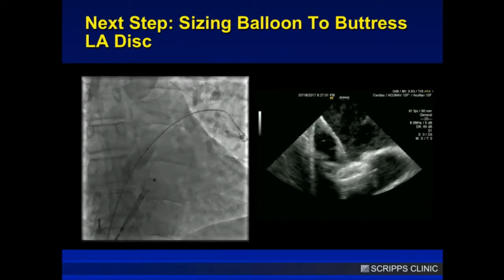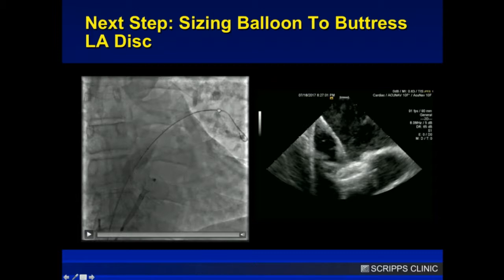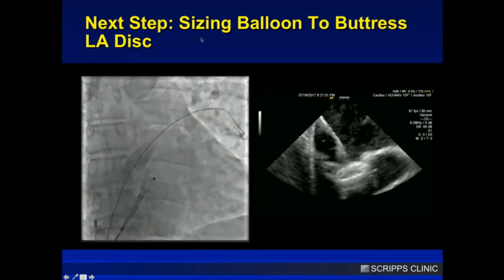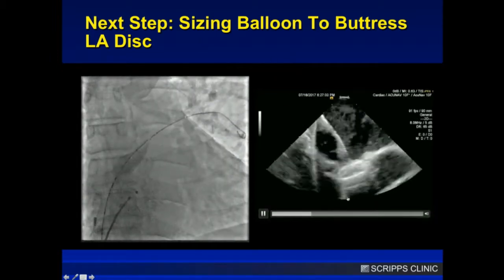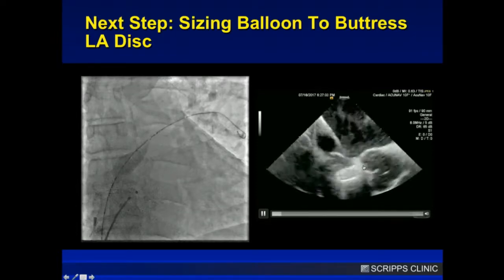The next approach is to use a catheter to prop your left atrial disc up, pushing it orthogonal to the septum. I don't usually use sizing balloons to size the ASD, but here I use a sizing balloon to help close the ASD. I got second venous access, crossed the ASD, put a wire in the pulmonary vein, and advanced a 20 or 25-millimeter sizing balloon over that wire so it straddles the interatrial septum. I inflate it to low pressure just to push that disc up, and then you can see the release.